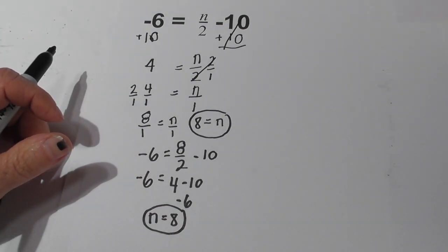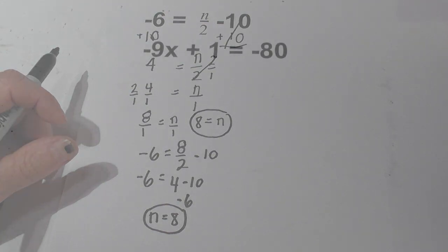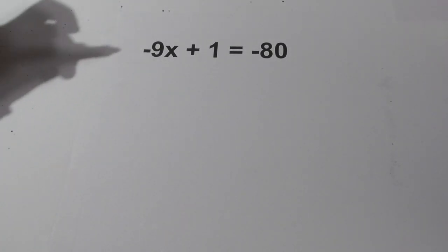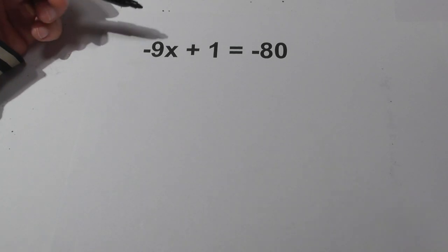Now let's get started on our next problem. Let's solve this two-step equation: negative 9x plus 1 equals negative 80.